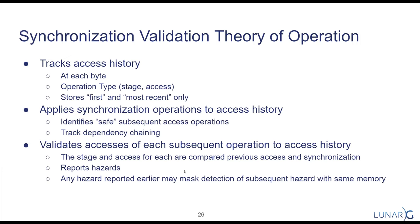We validate subsequent accesses by examining what earlier accesses occurred and what accesses are safe between them. We report hazards. With the most-recent tracking logic, if we reported an earlier hazard, we may not report all subsequent hazards — so when you fix one hazard, you may then expose more. Don't be surprised when fixing one hazard reveals additional ones.